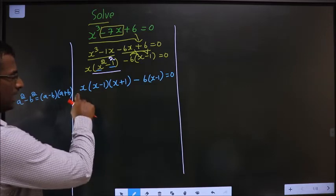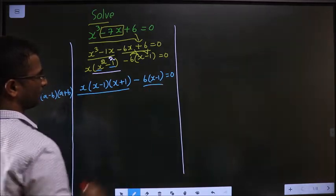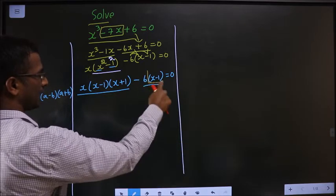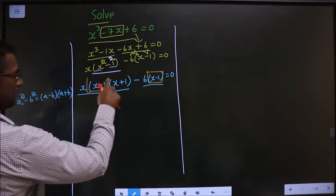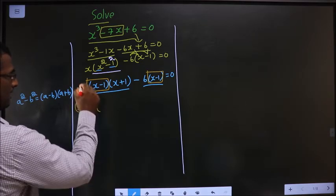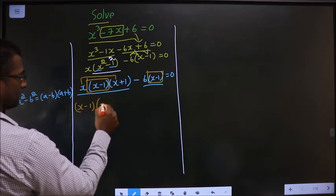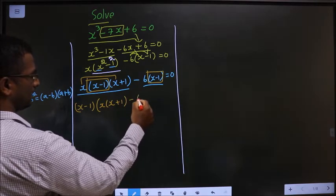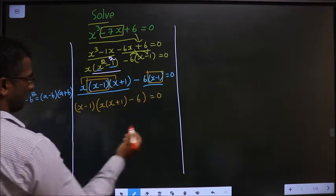Next. What can I take common from these two? Did you get the catch? I can take x minus 1 common from both. If I take x minus 1 common, here I'm left with these two, and here I am left with 6.